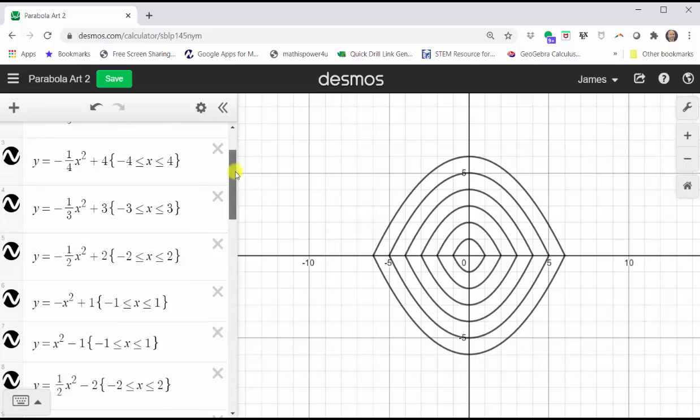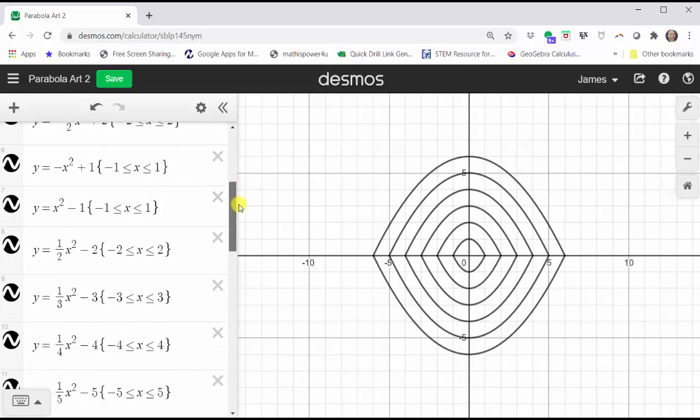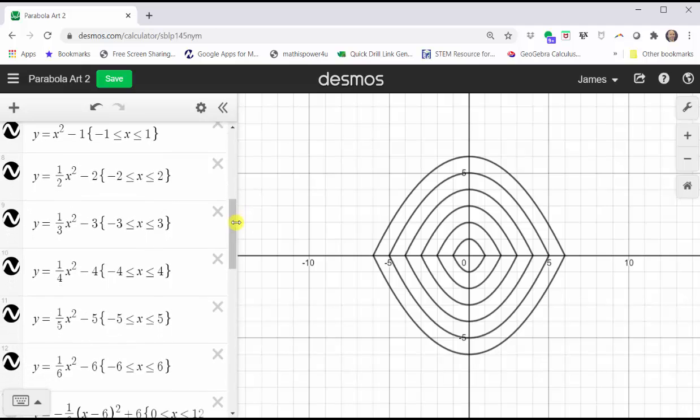Notice how the value of c in all the equations is zero, which means none of the graphs have been shifted left or right. There's only vertical stretch or compression, and vertical shift up or down.